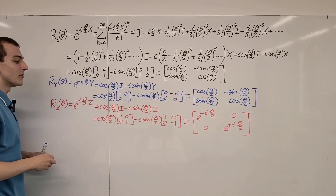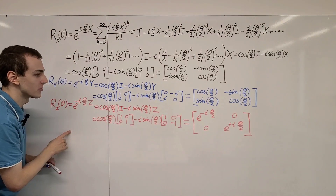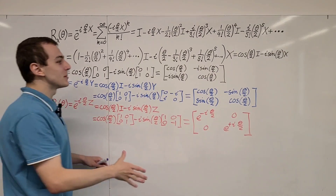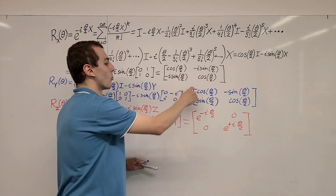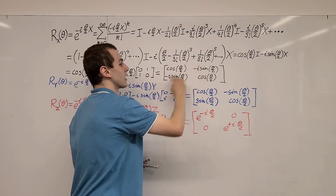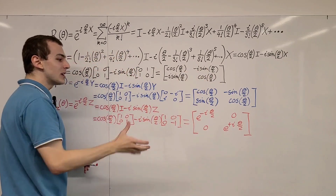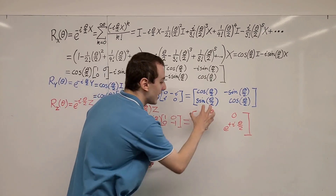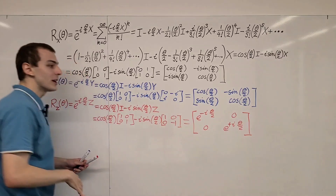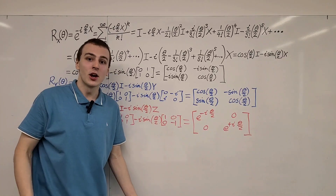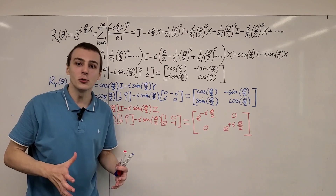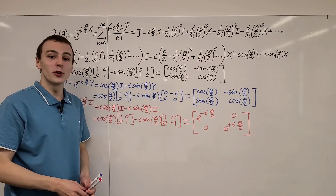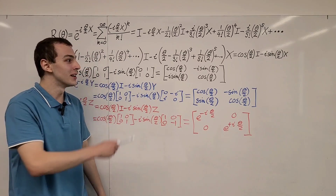So now we've defined all three of these rotation operators, and we're going to be using these operators in later videos in the quantum mechanics playlist. You can see similarities between the matrix representations of R_X and R_Y — the only difference is the coefficients of the off-diagonal terms. But something very different occurs for Pauli Z, where we can group the cosines and sines together using Euler's formula into complex exponentials. Make sure you watch the other videos in the quantum mechanics playlist to see how these operators are actually used and how they create visualizations on the Bloch sphere.